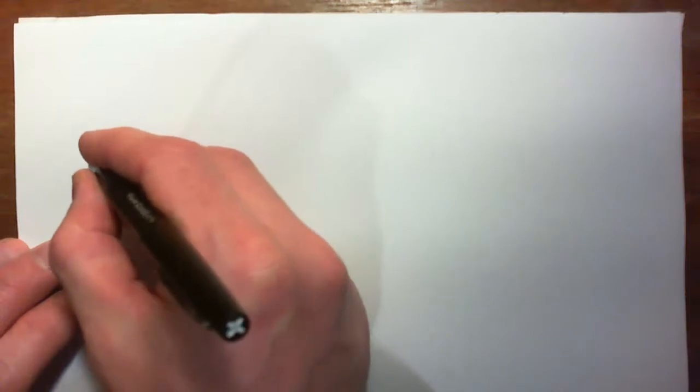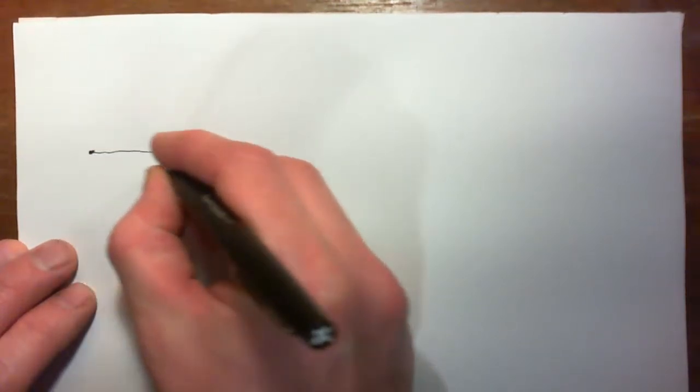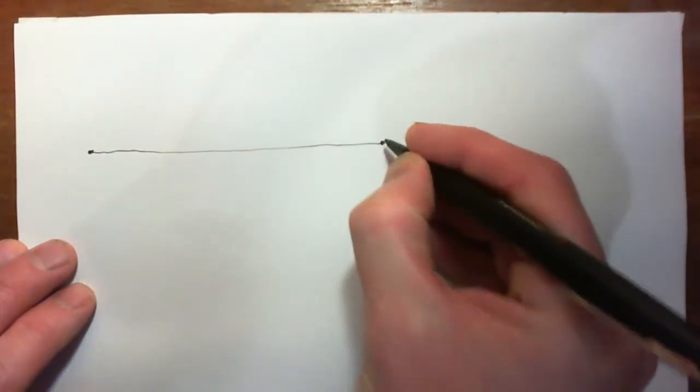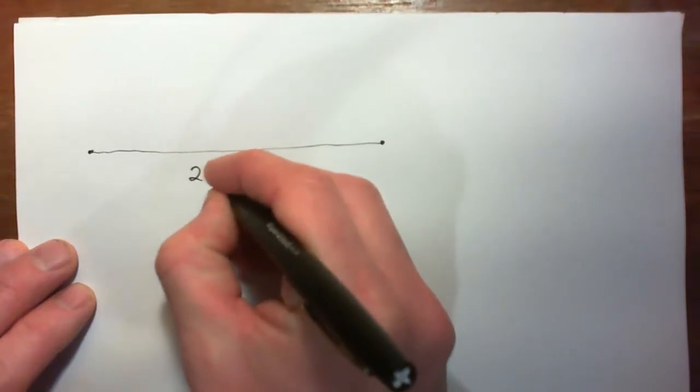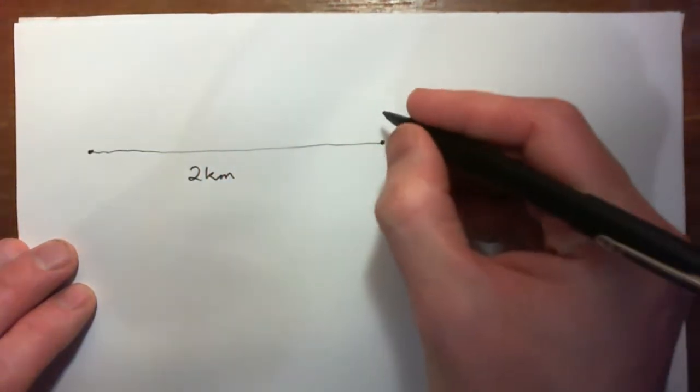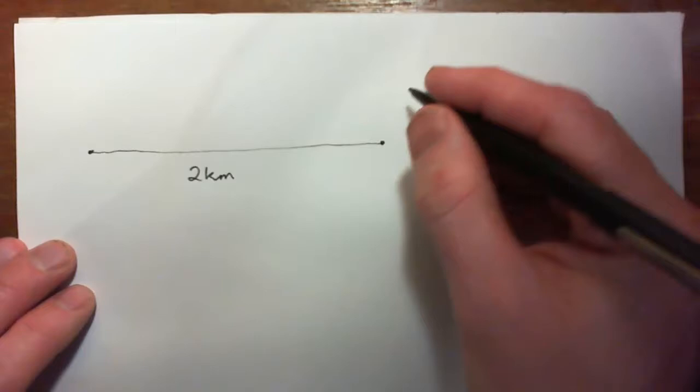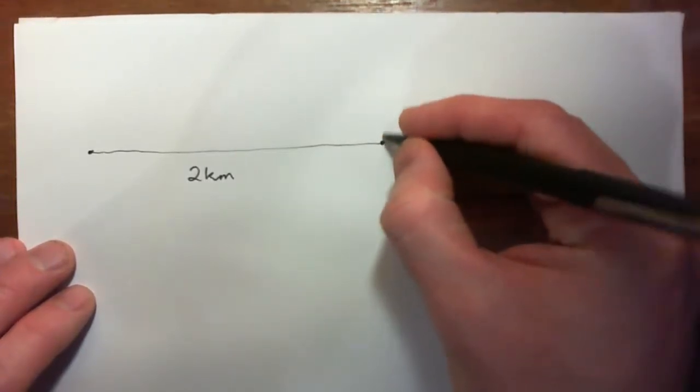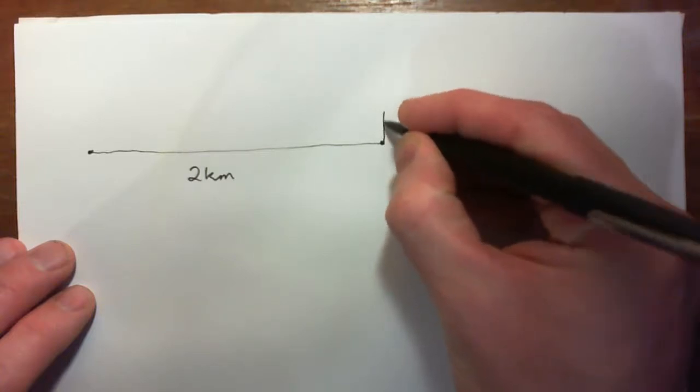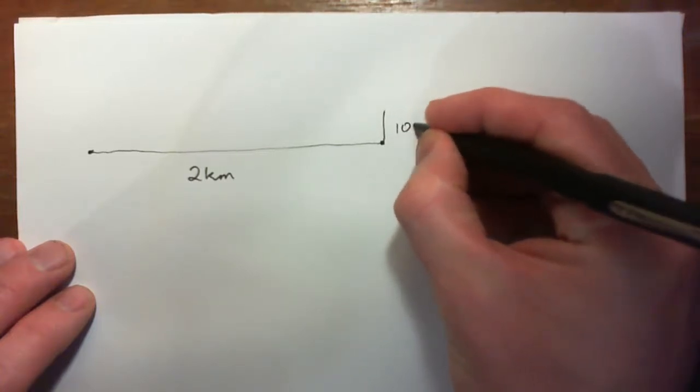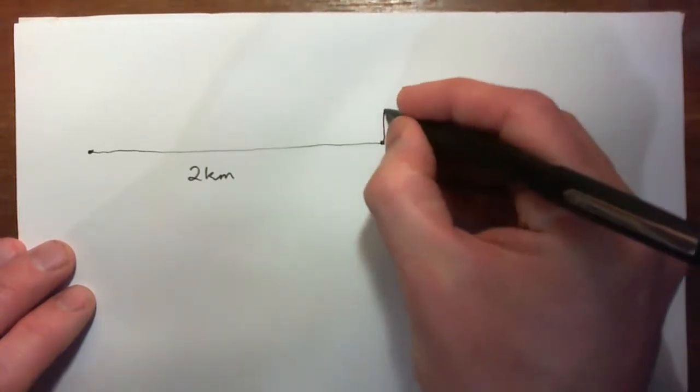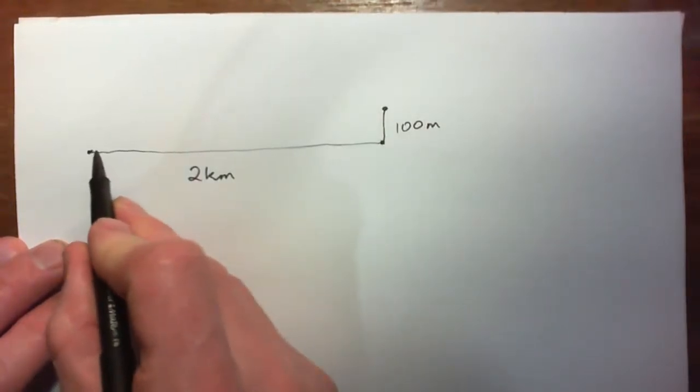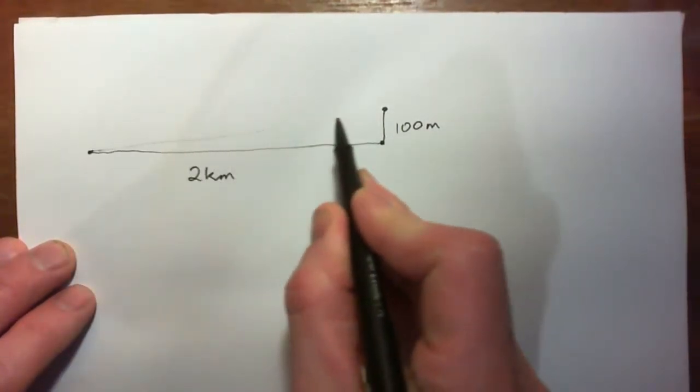So we have a road and the horizontal distance is 2km and it rises 100m on average over that distance. So here it goes, it rises 100m to here. So this is our road here.